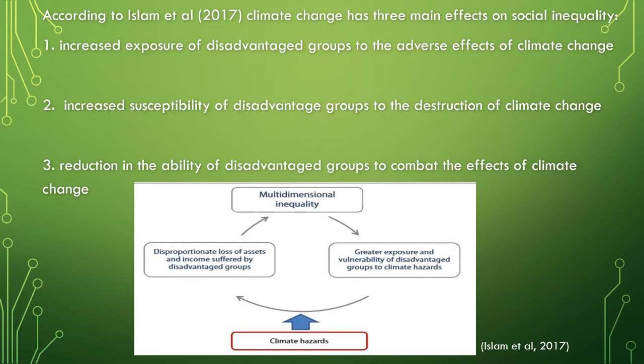According to Islam et al. 2017, climate change has three main effects on social inequality. The first is increased exposure of disadvantaged groups to the adverse effects of climate change. The second is increased susceptibility of disadvantaged groups to the destruction of climate change. And the third is the reduction in ability of disadvantaged groups to combat the effects of climate change. This image highlights the vicious cycle that exists between social inequality and climate change, and how they can be bidirectional.